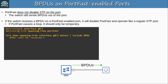Question 2: What happens when one of its PortFast-enabled ports receives a BPDU when BPDU Filter is globally enabled? The answer is C — it disables PortFast and BPDU Filter on the port. When BPDU Filter is globally enabled, it stops PortFast-enabled ports from sending BPDUs. But if a port receives a BPDU, it disables PortFast and BPDU Filter on the port, and then the port operates like a normal STP port.